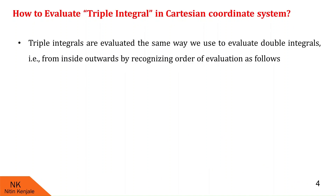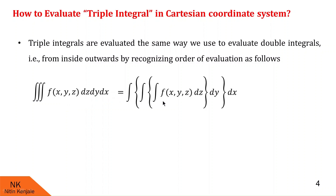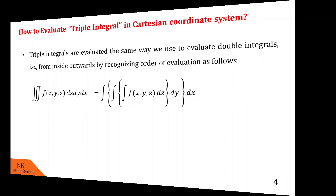Triple integrals are evaluated in the same way we used to evaluate double integrals — that is, from inside outwards by recognizing the order of evaluation. This triple integration of f over dz dy dx is evaluated as follows: first, we evaluate the inside integral with respect to dz; then, whatever the answer comes, we evaluate its integral with respect to dy; then its integral with respect to dx. These curly brackets will help you to evaluate these three integrals one by one.